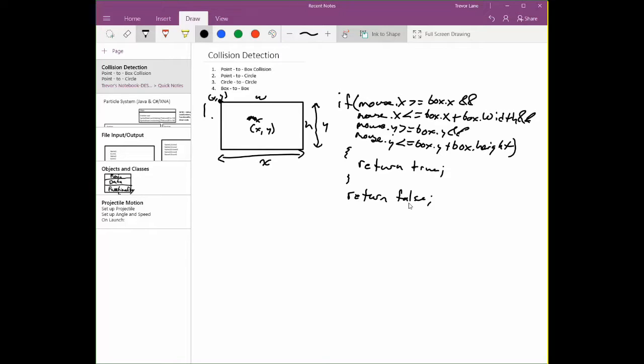So point to circle collision detection is actually in no way similar, which is kind of surprising, but that's the way it is.